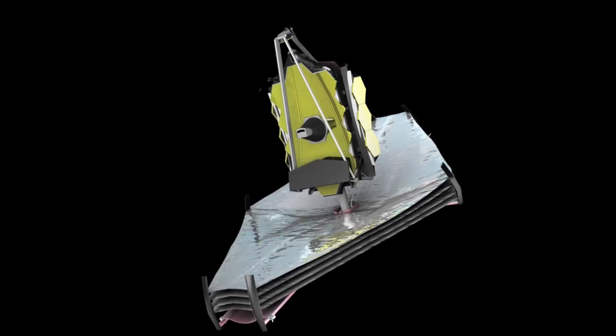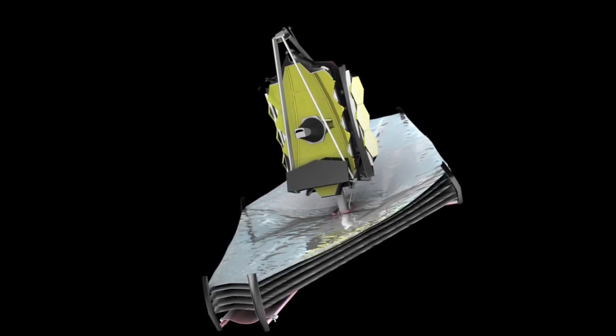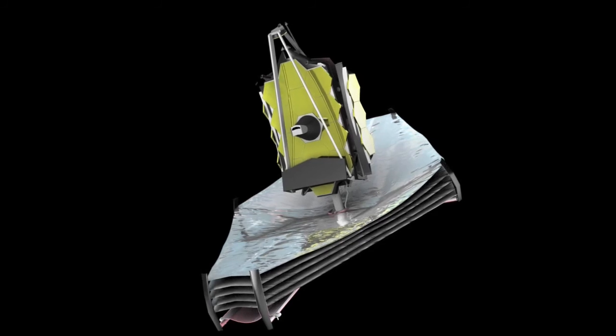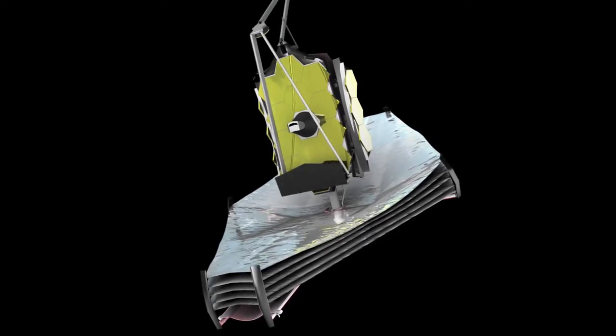The large primary mirror is made of 18 hexagonal segments that will also unfold and move into position on route to L2.